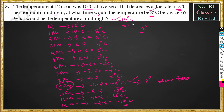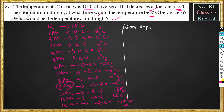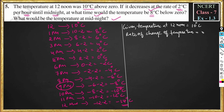This is the concept of the problem. Now we will put the actual steps and solve the problem. Given: temperature at 12 noon is equal to 10 degree Celsius above zero, that is plus 10 degree Celsius. It decreases at a rate of 2 degrees Celsius per hour. So we can put this as rate of change of temperature equal to minus 2 degree Celsius per hour.